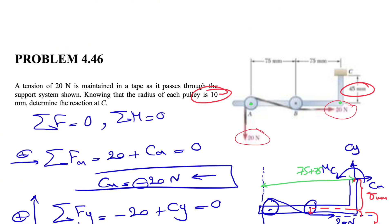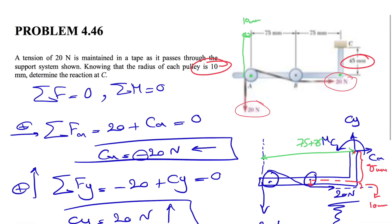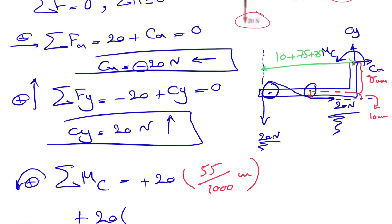We also have this little distance in here, which is again the radius of the pulley, which is 10. So what we have in here is another plus 10 too. So all we have are 160 millimeters, 75 plus 75 which is 150 plus 10, 160. That would be millimeters. If we divide that by 1000, we'll get it in meters.